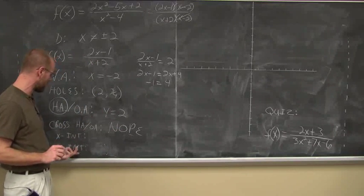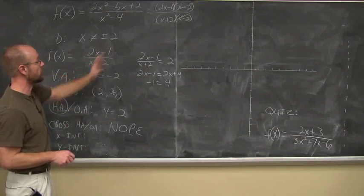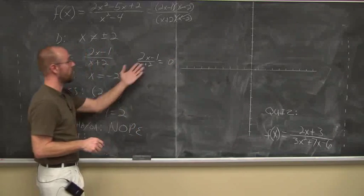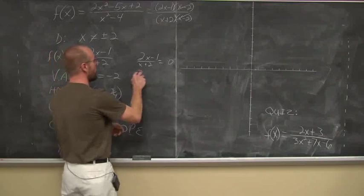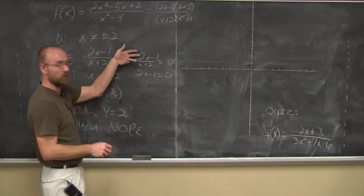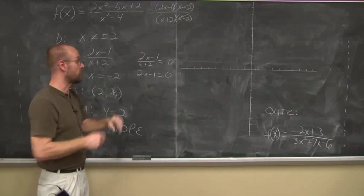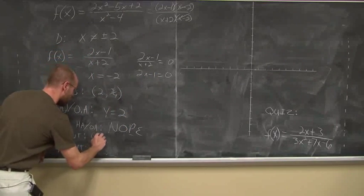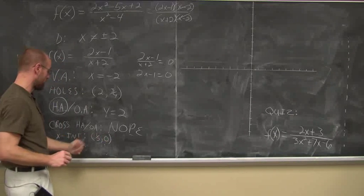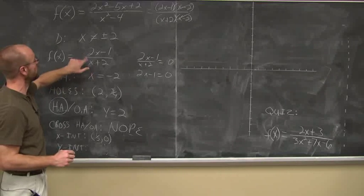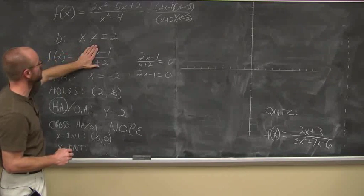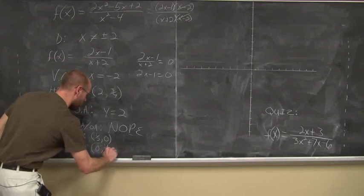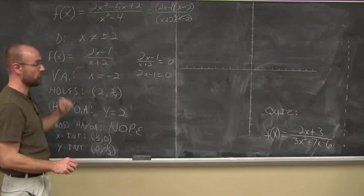Let's find a few extra points — x-intercepts and y-intercepts. For the x-intercept, set the reduced function equal to 0: 2x - 1 equals 0, giving x equals 1/2. So the x-intercept is at (1/2, 0). For the y-intercept, set x equal to 0: we get negative 1 over 2, so the y-intercept is at (0, -1/2).